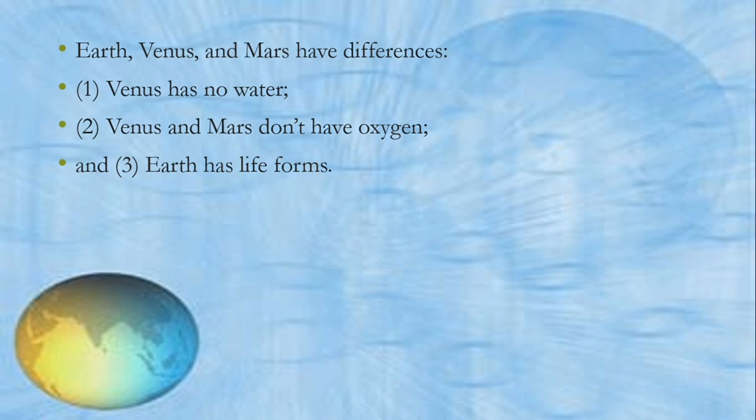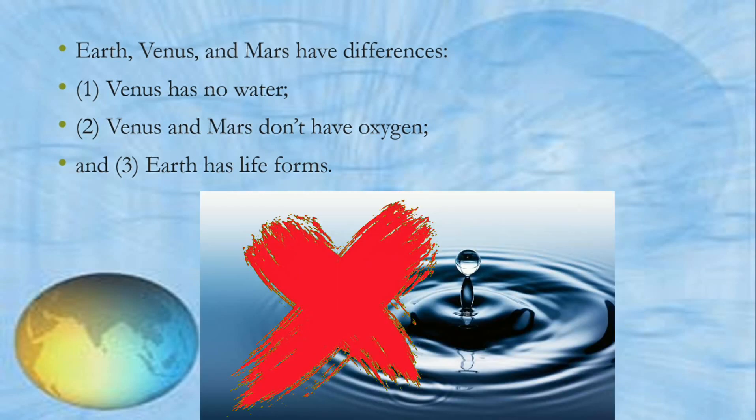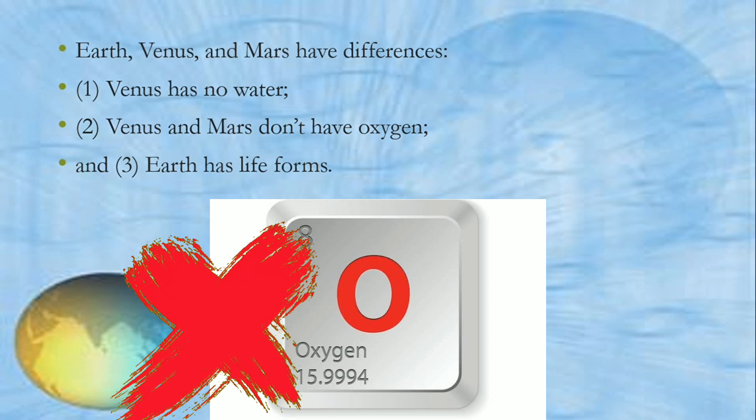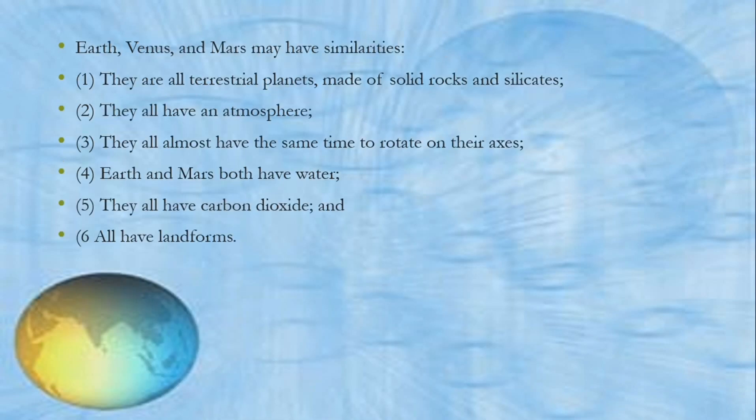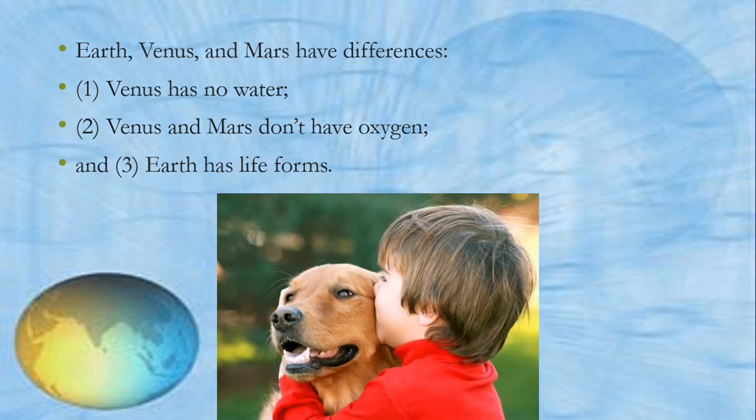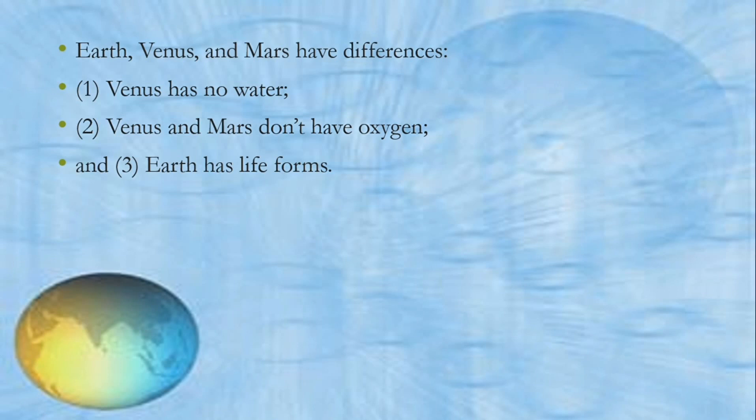What are their differences? First, Venus has no water, so Venus is not suitable for living. Next, Venus and Mars don't have oxygen. Although they have these characteristics that the Earth possesses, they don't have oxygen, which is one of the basic requirements to support life. Third, Earth has life forms.